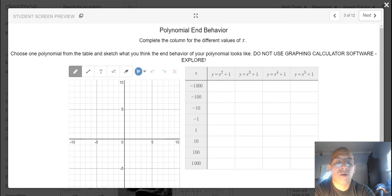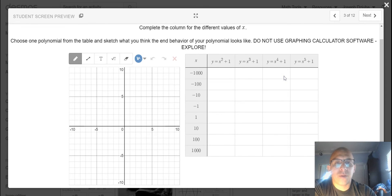Which brings us to our first exploration into the end behavior of different polynomials. So within this table you have five different polynomial functions.